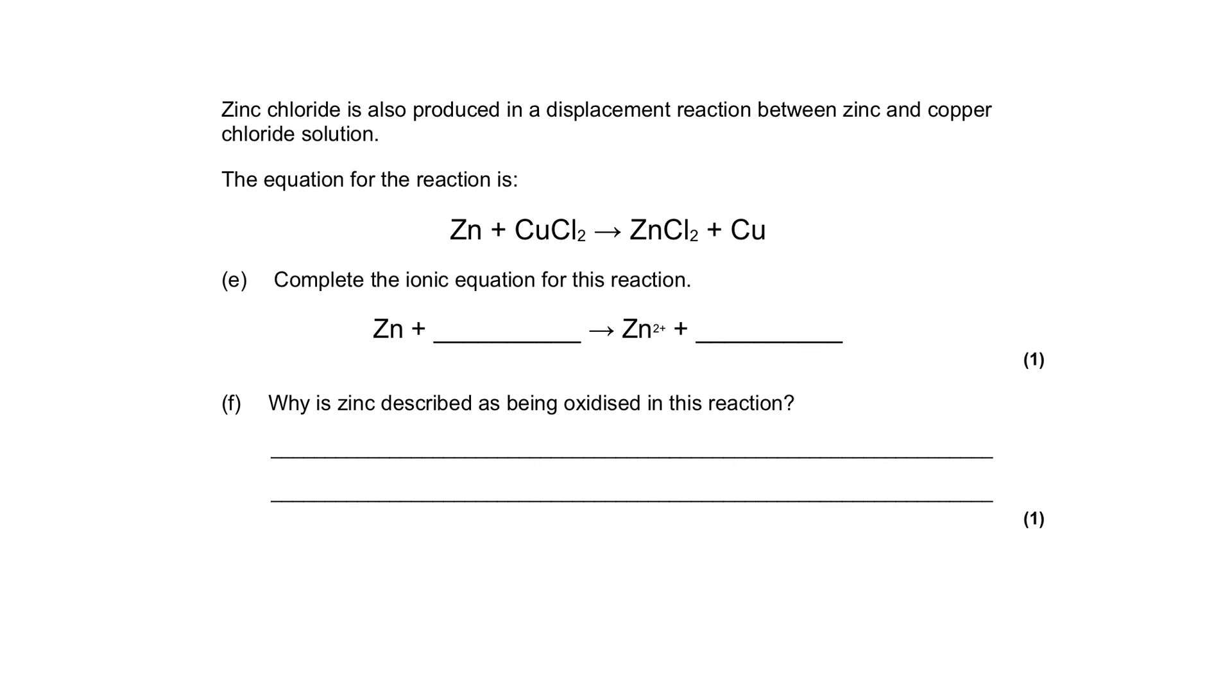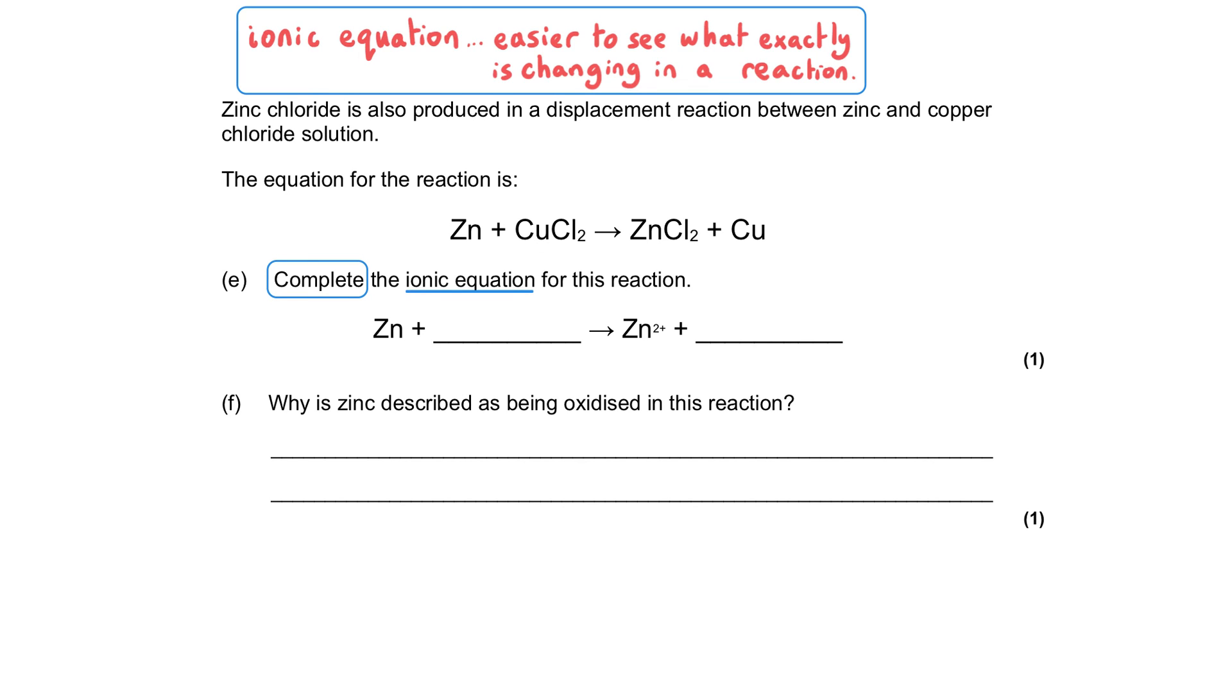Zinc chloride is produced in a displacement reaction between zinc and copper chloride solution. The equation for the reaction is Zn, the zinc, reacting with copper chloride, producing zinc chloride and copper. We've been commanded to complete the ionic equation for this reaction. Ionic equations simplify the overall equation by getting rid of those chemicals from ionic compounds that are not changed during the reaction, so generally there are fewer chemicals. We have the zinc atoms as reactants turning into zinc ions with 2 plus charge.